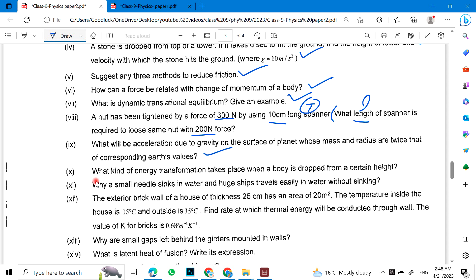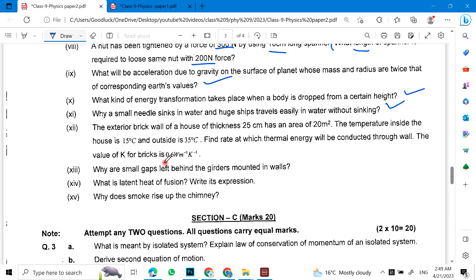What kind of energy transformation takes place when a body is dropped from a certain height? Why small needles sink in water and huge ships travel easily in water without sinking? The volume is different. And the exterior block, a brick wall of a house of thickness 25 cm has an area.